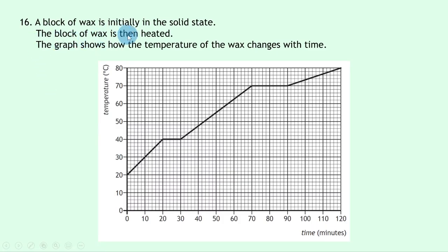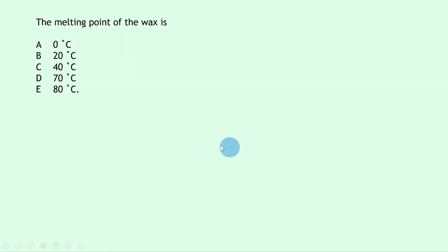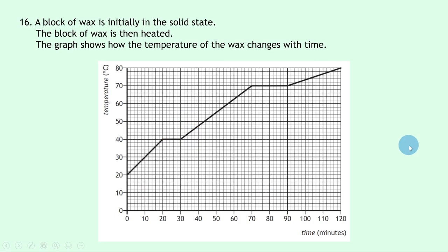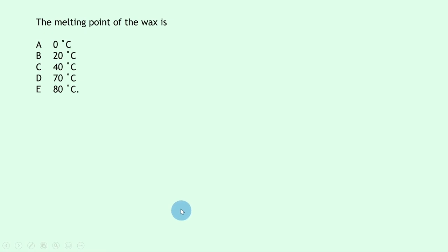Question 16: a block of wax starts as a solid and is heated; the graph shows temperature versus time. The melting point is where the temperature plateaus — the wax starts melting rather than continuing to heat up. Reading from the graph, this corresponds to 40 degrees Celsius — answer C.